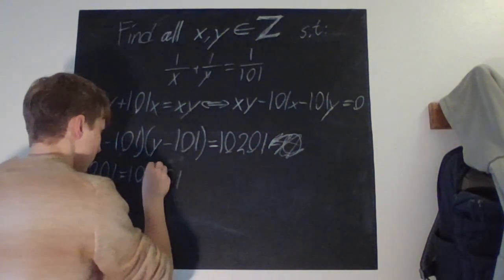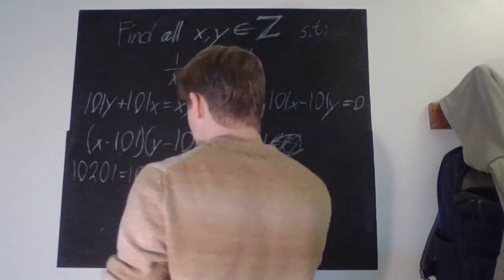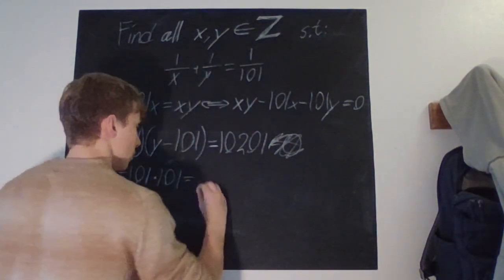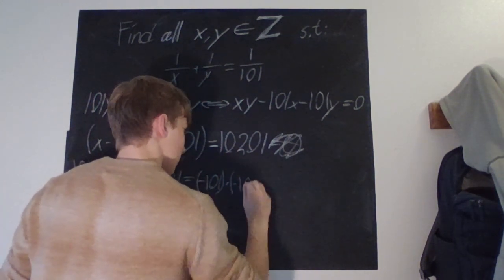So, now, we just have to account for all the negative variants. So, we have that this is also equal to -101 times -101.